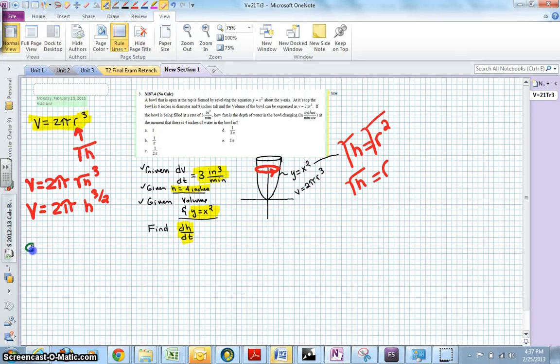Now when I differentiate, I get dv dt equals 3 halves times 2 pi h to the 1 half dh dt, and from here I'm just plugging in knowns and solving for dh dt.